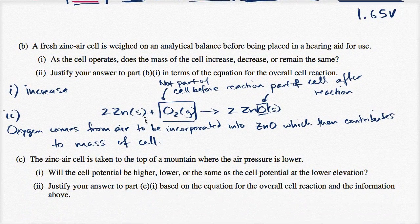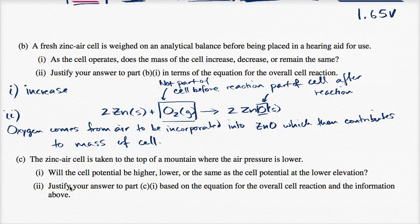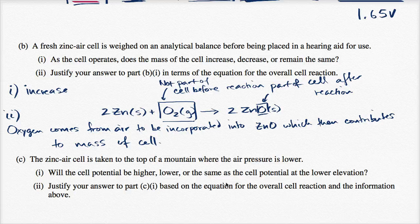The zinc air cell is taken to the top of a mountain where the air pressure is lower. Will the cell potential be higher, lower, or the same as the cell potential at the lower elevation? Justify your answer to the first part based on the equation for the overall cell reaction and the information above.